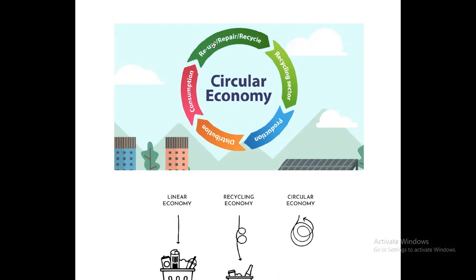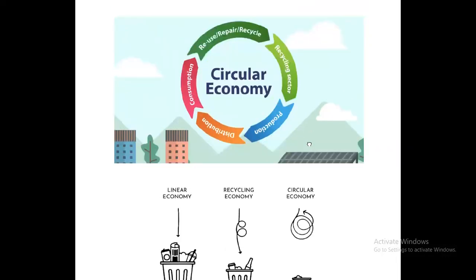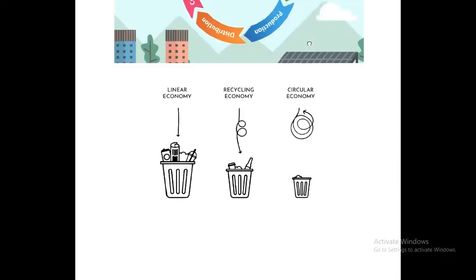In a circular economy, the process is: production, then distribution, then reuse, repair, and recycle — and this loop continues. A linear economy generates more waste. A recycling economy recycles some items. But a circular economy emphasizes reusing and repairing items until they absolutely must be recycled, making it the most sustainable model.